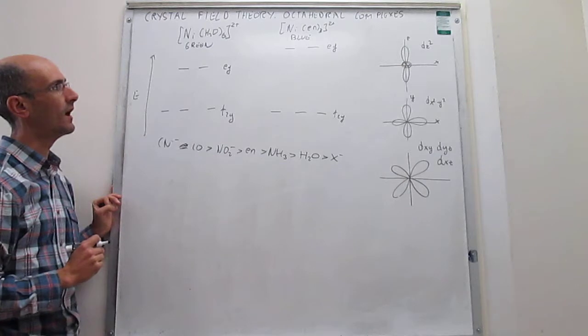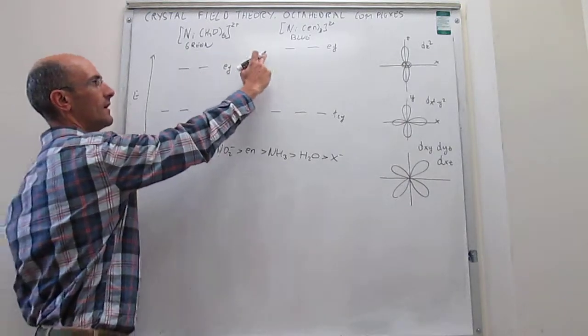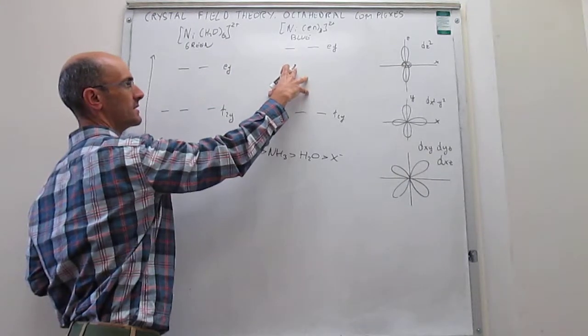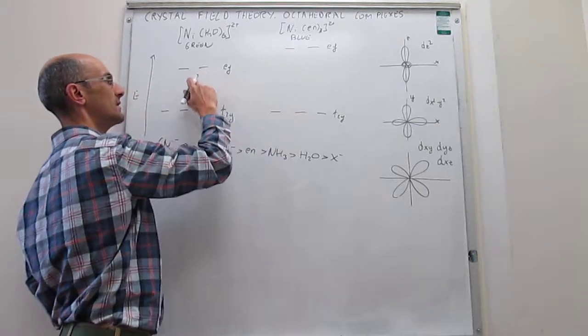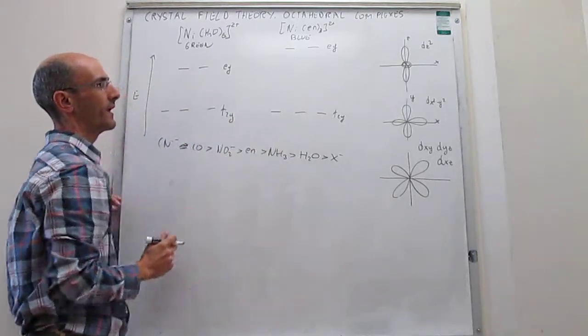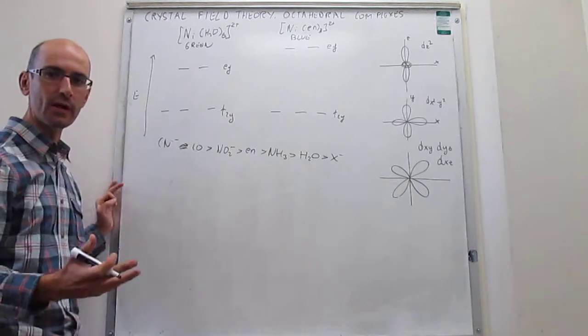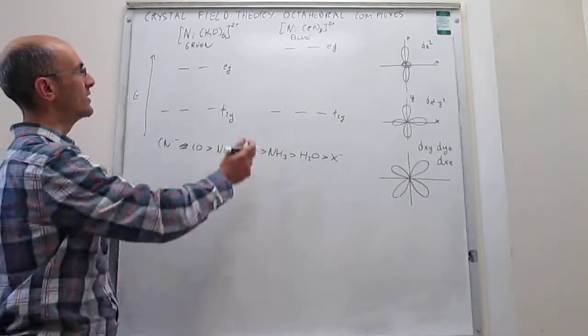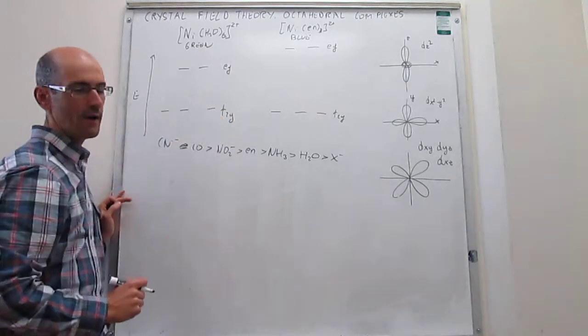Now the question is, why is this green and why is this blue? We do understand that the separation between these orbitals is smaller for the water complex than for the ethylenediamine. But the question is, why do we have the variation from green to blue?